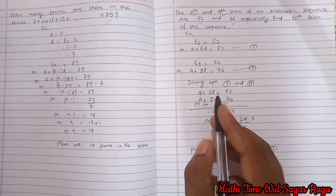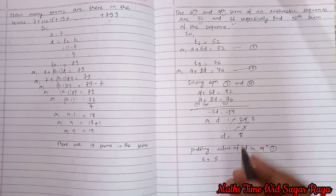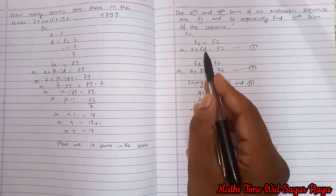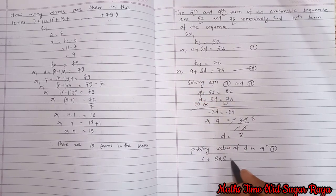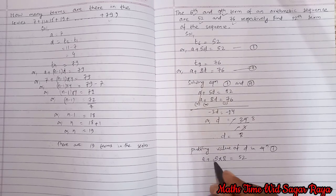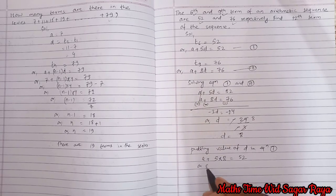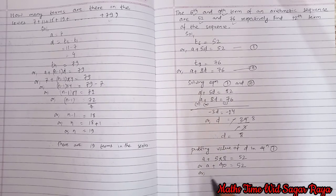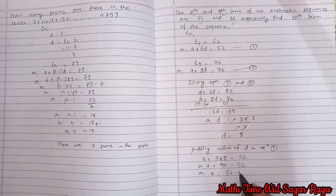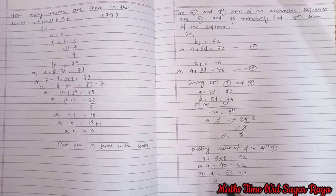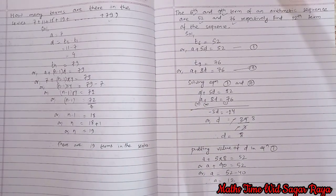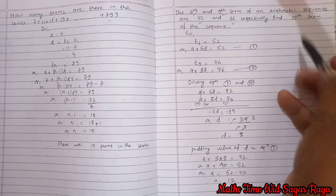So a plus 5d, so instead of d we can write here 8, equals to 52. So a plus 5 times 8, a plus 40 equals to 52. Or a equals to 52 minus 40. Therefore a equals to 12.